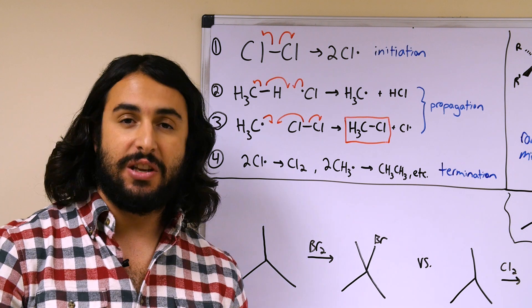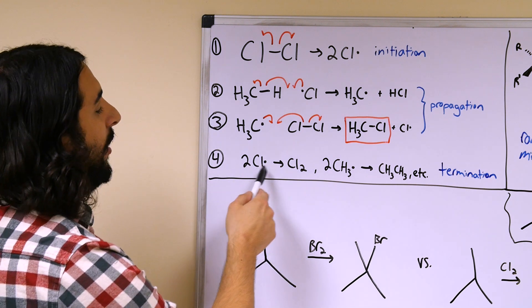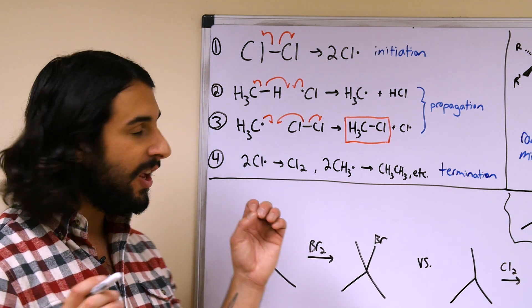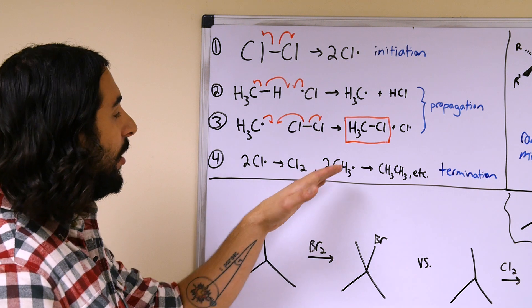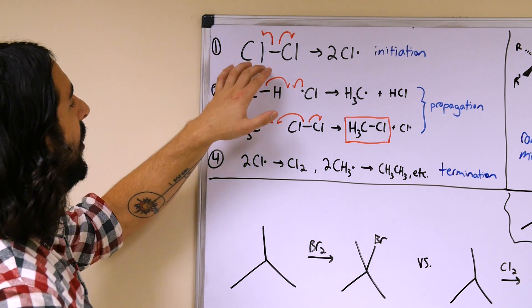Any two radical species that you could find in this system, whether it was two chlorine radicals, two methyl radicals, a chlorine and a methyl radical, if any of those were to collide then they would form a covalent structure in a termination step. Basically here to make this, let's just remind ourselves we're forming chlorine radicals.